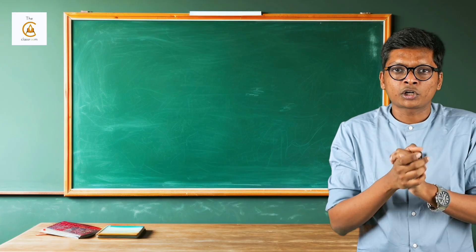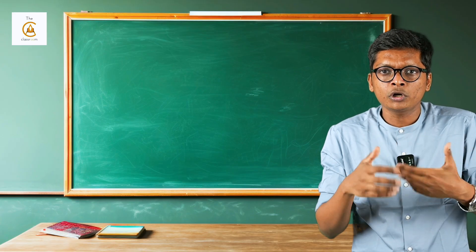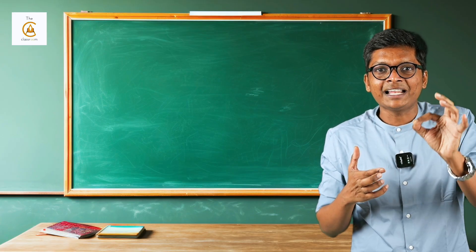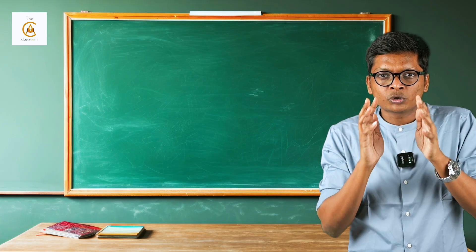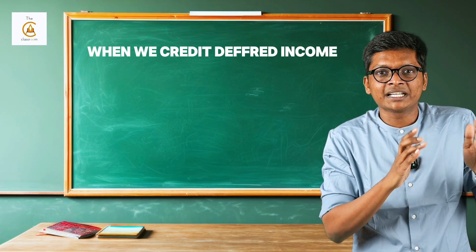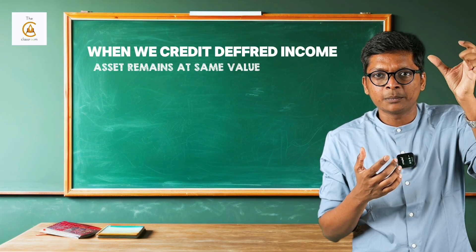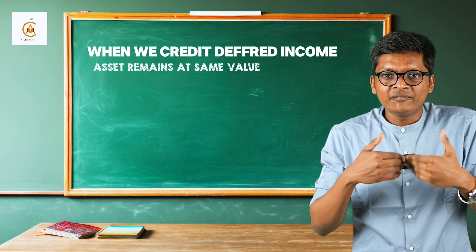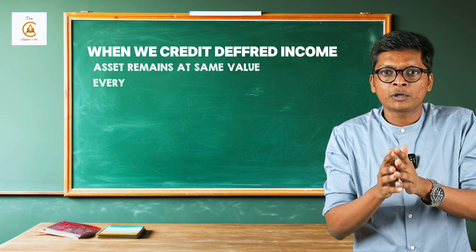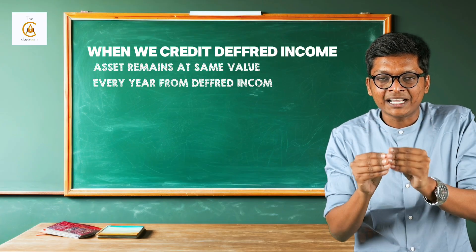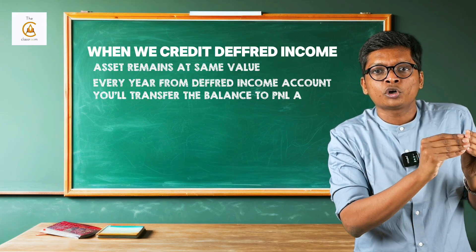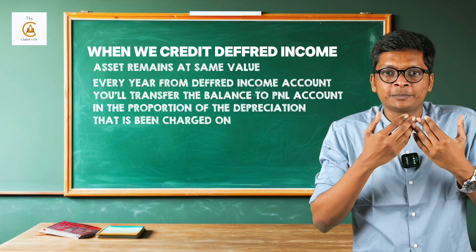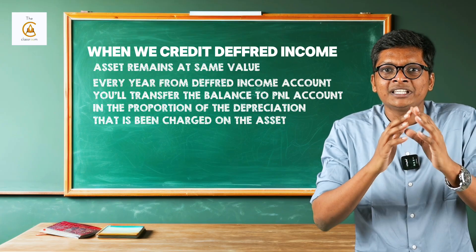If it's a depreciable asset, the entry will be bank account debit to deferred income. If it's a non-depreciable asset like land, the entry will be bank account debit to capital reserve. The second method is more logical where they don't want to disturb the value of the asset. When you credit deferred income, the asset remains at the same value, and every year you transfer the balance from deferred income account to P&L in the proportion of the depreciation being charged on the asset.